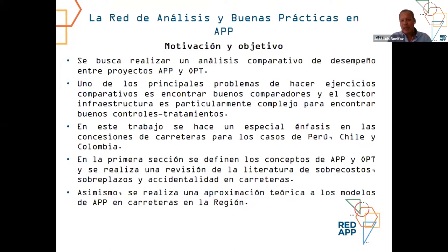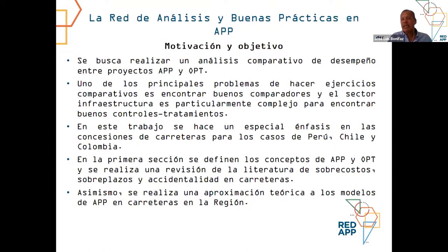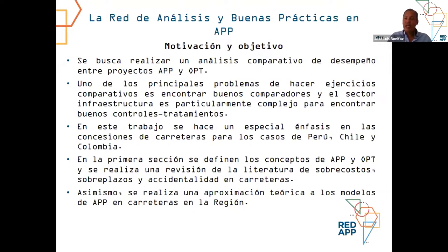When we have a greenfield, we won't have data available before the concession because the infrastructure didn't exist yet. This leads to the second problem: I need to compare the greenfield with other similar units, whether PPPs or public works projects. We need robustness in terms of our indices and estimations at the local level. Sometimes we conduct international comparisons, but it's better to do it with national comparative data. To conduct sound comparative exercises, you have to look at exactly what the performance indicators are. Do we use an aggregate indicator or not?